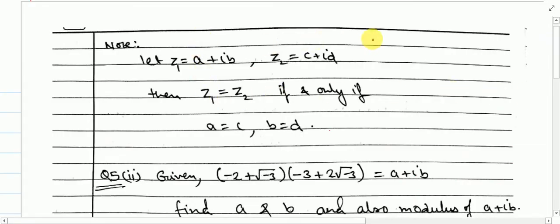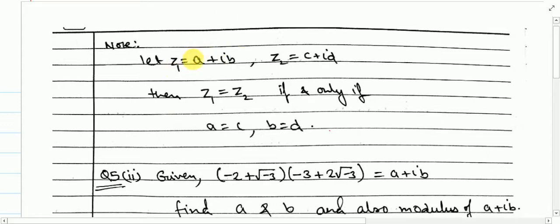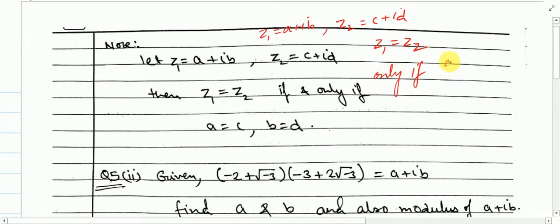Before we go to question number 52, let us understand that if you have two complex numbers, Z1 = A + iB and Z2 = C + iD, then these two are equal only if A is equal to C and B is equal to D. The real part of Z1 should equal the real part of Z2, and the imaginary part of Z1 should equal the imaginary part of Z2.